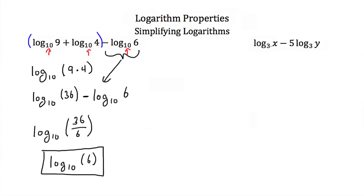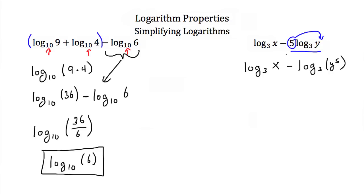Here we have the log base 3 of x minus 5 times the log base 3 of y. First, I notice a subtraction sign, so I'll use the quotient property. But before that, I look at the second term, 5 log of y, and use the power property in reverse — taking the 5 and making it the exponent of y. This gives us log base 3 of x minus log base 3 of y to the 5th power, which using the quotient property becomes the log base 3 of x divided by y to the 5th power.